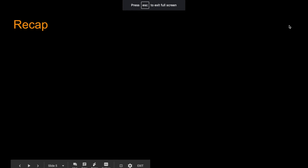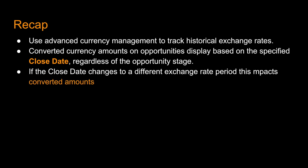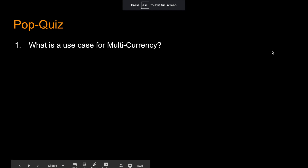Fantastic! To recap: you use Advanced Currency Management to track historical exchange rates, which is very useful when dealing with a fluctuating exchange rate. Converted currency amounts on opportunities display based on the specified close date. If the close date was later, say April 1st, it would use a different exchange rate. If the close date changes on that opportunity, it uses the exchange rate from the applicable period.